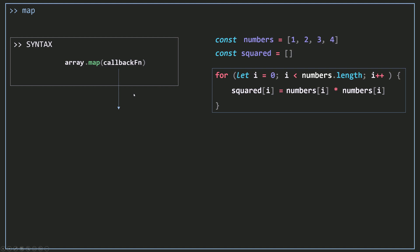Let's talk about the callback function. You want to create a function and you can use any name as long as it's not a reserved name. The first parameter is going to be the value — for example, 1, 2, 3, 4. The second parameter is the index — so 0, 1, 2, 3. And the third parameter is the array — the array you call map on. For example, if I call map on numbers, the array parameter is going to be numbers. Sometimes when you don't have your map called in the same scope as your array, you need to use this third parameter to get access to your array.